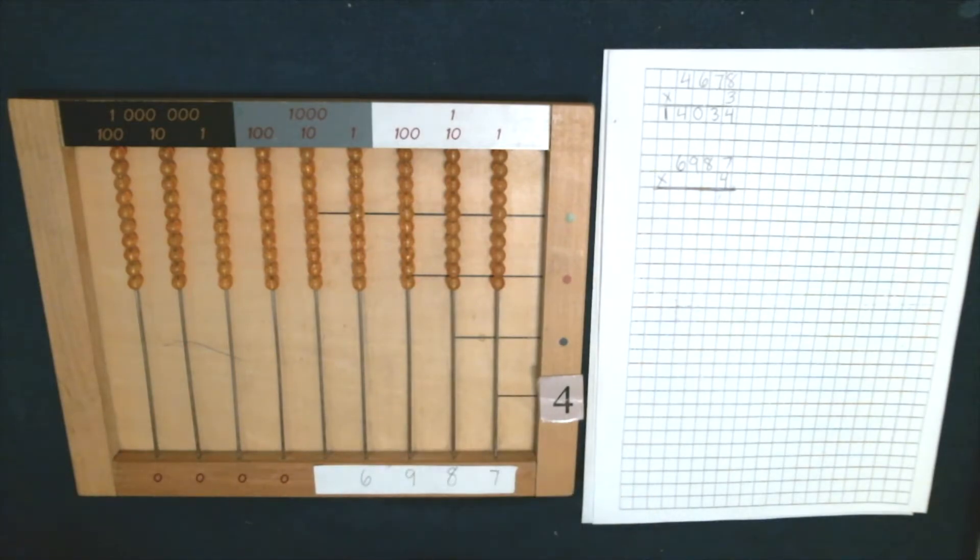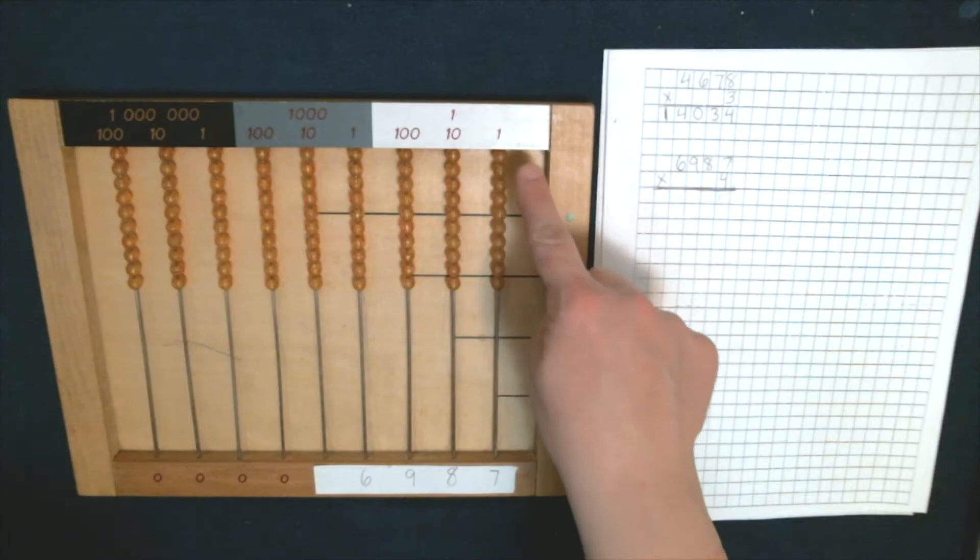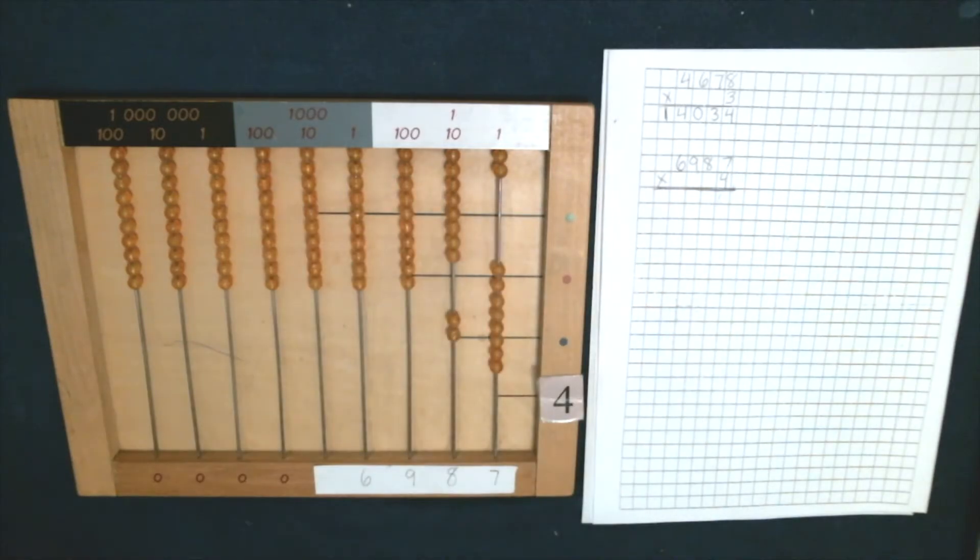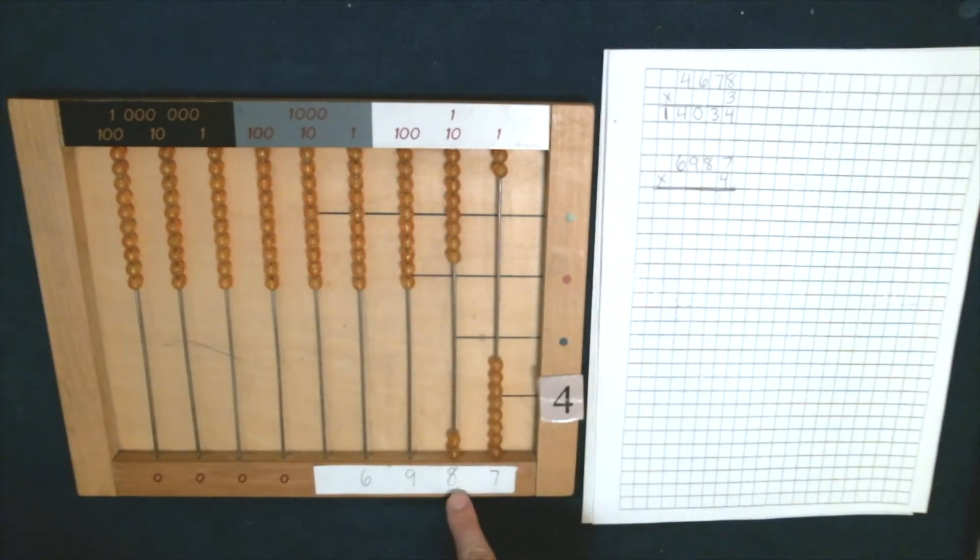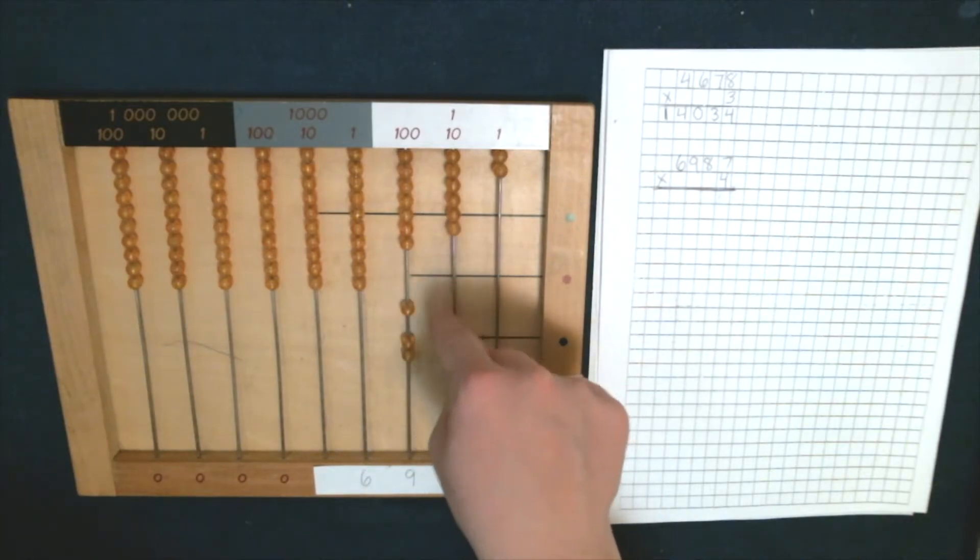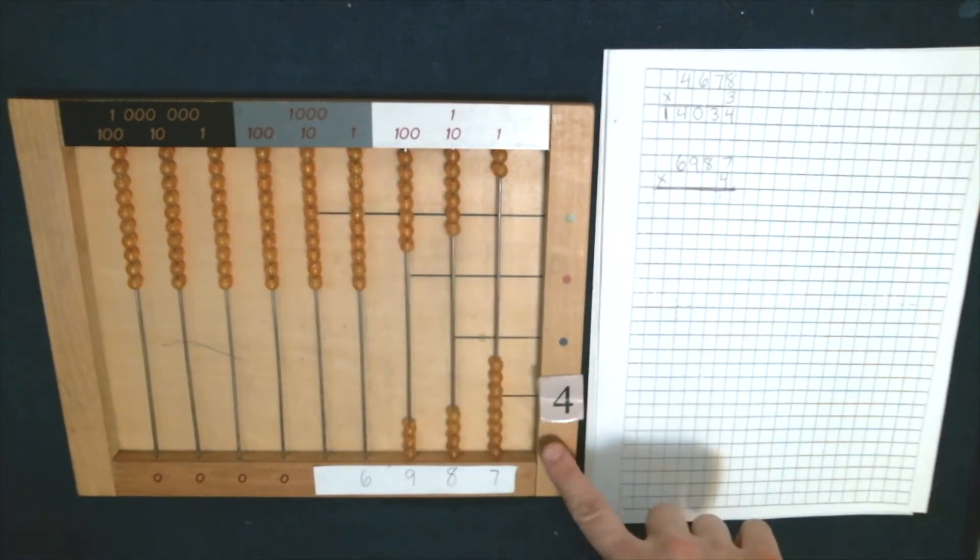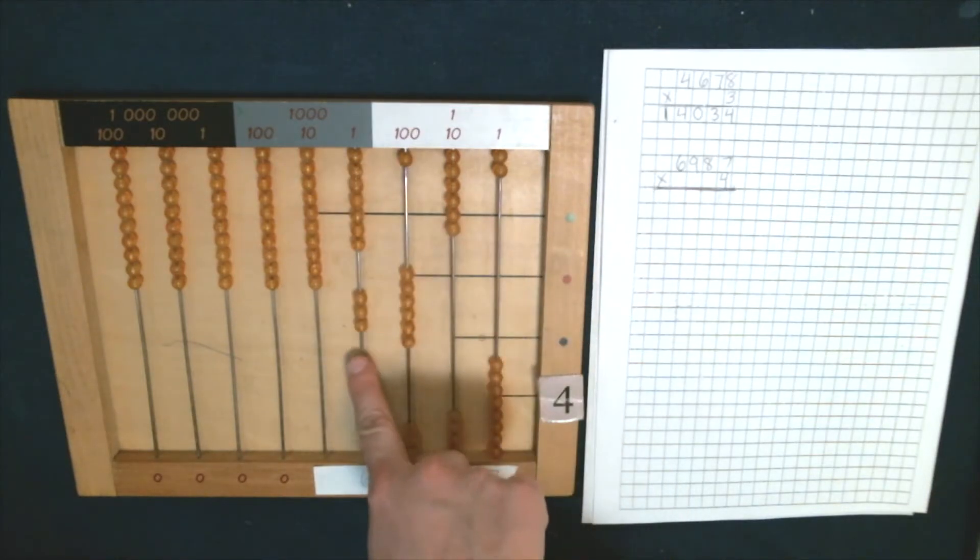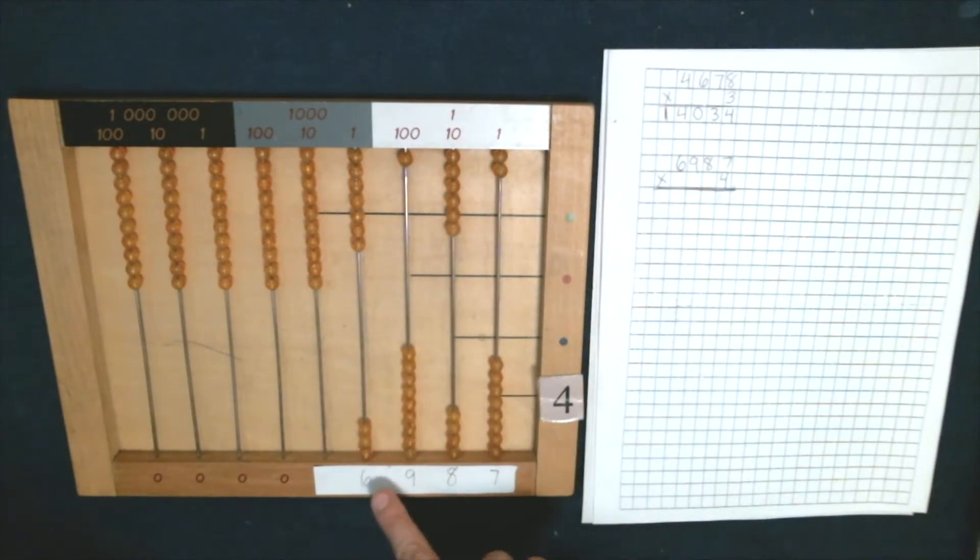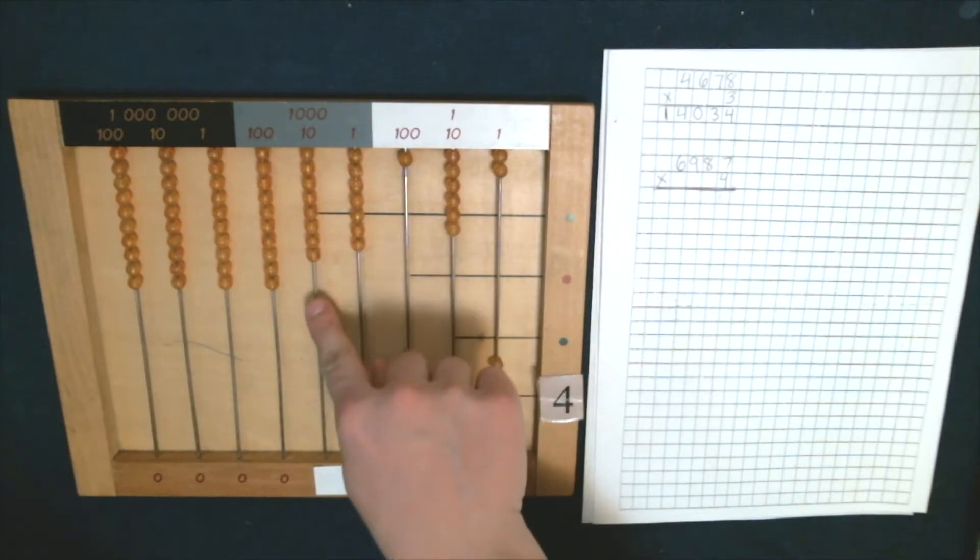This time we're going to multiply by four. So four times seven. What is four times seven? Four times seven is 28. I'm going to bring that down. Now we're going to move on. Four times eight is 32. Four times nine is 36. And four times six is 24.